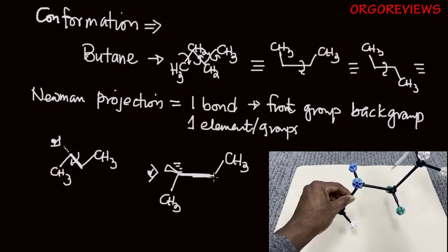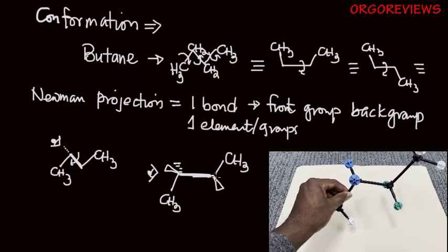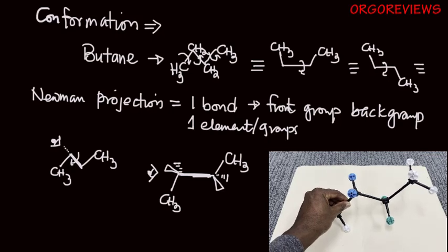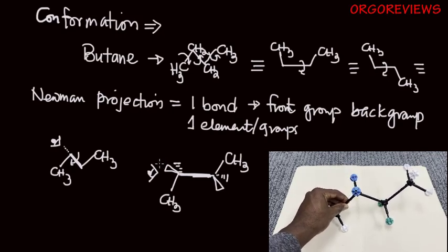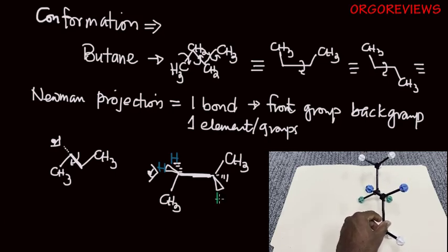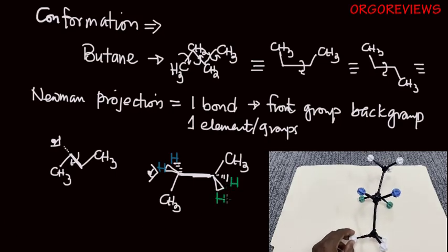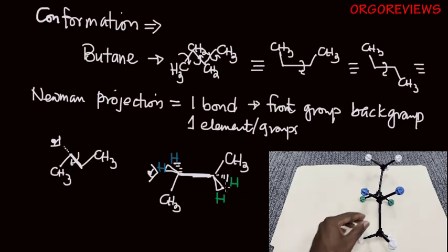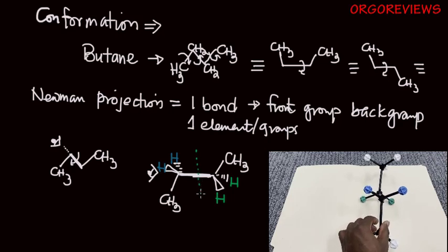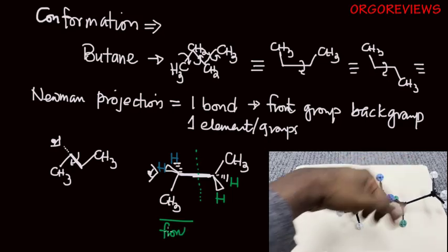If your eye is on this side, you're going to see groups pointing towards you and groups pointing away from you. In this case, we're going to have the blue hydrogens facing you and the green hydrogens facing away from you, as illustrated in the model kit. We can basically divide the whole molecule into two parts: the front and the back groups.